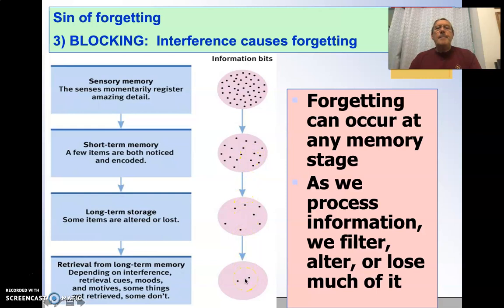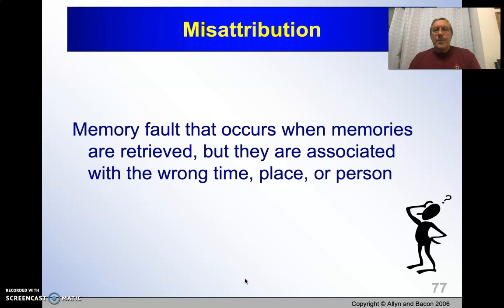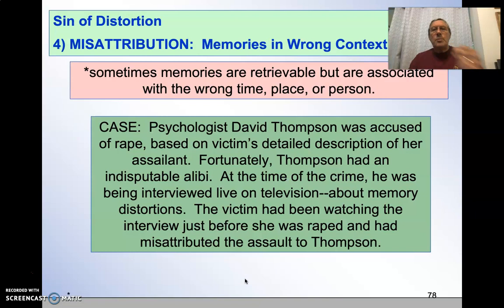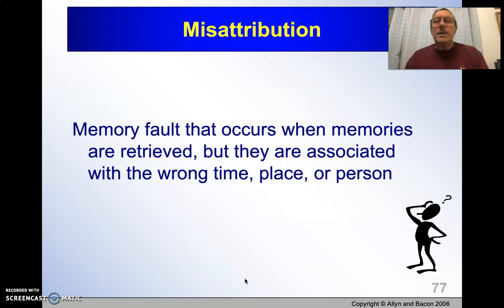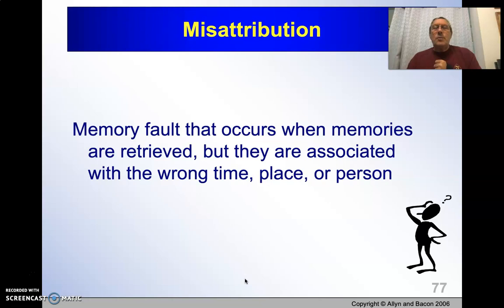Another category is what's called misattribution. That's when you recall memories but they're associated with the wrong time, place, or person. I'll bet you remember sitting at the Thanksgiving table — everybody's there, the whole family's talking, sharing stories — and all of a sudden you go, 'I didn't realize that's what happened,' or 'I didn't realize so-and-so was there.' That's misattribution: you simply didn't process that information at the time.